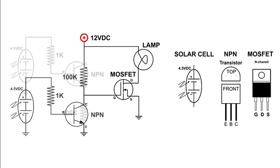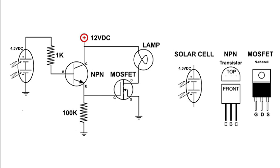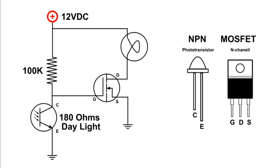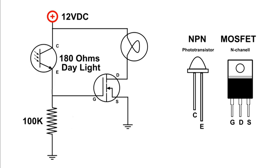But if we take the output from the emitter, it's just the opposite. When it's daylight, the lamp is on. And when it's night, the lamp is out. So phasing is very important to understand. Thanks for watching.